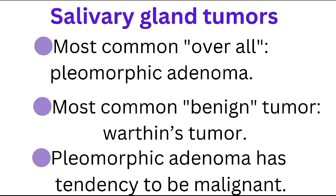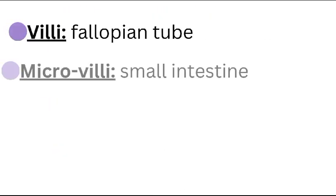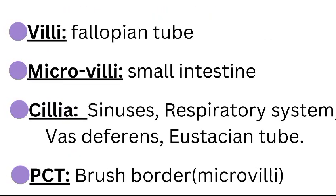The most common overall salivary gland tumor is pleomorphic adenoma, while the most common benign tumor is Warthin tumor. Pleomorphic adenoma has a tendency to become malignant.